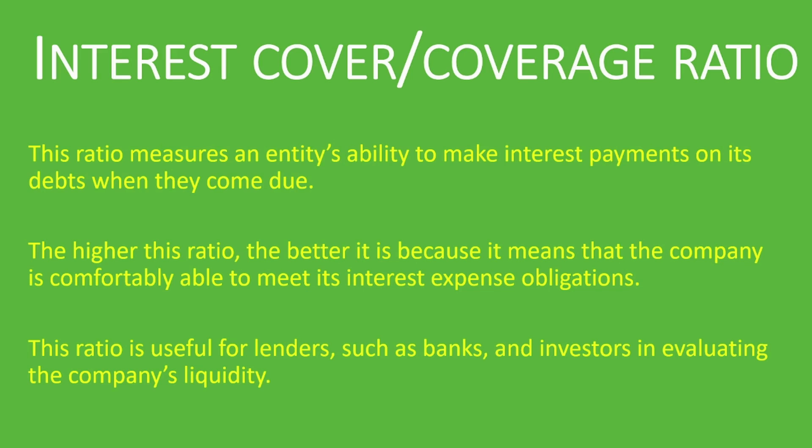An interest coverage ratio of two, for instance, might be very bad for a specific industry but average for another. When making comparisons, you can compare the trend over a period of years or months — monthly, quarterly, semi-annually, or annually — to see if it's growing or declining. You can also compare it to your competitors' ratio and to the industry average to see how well the company is doing.